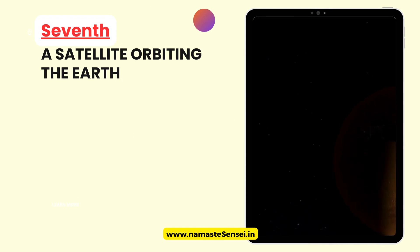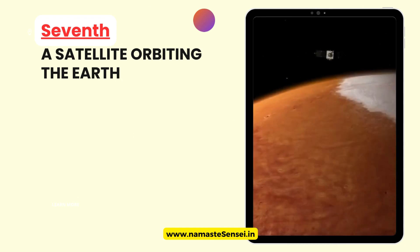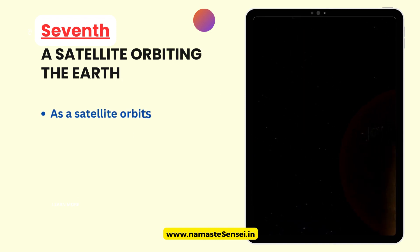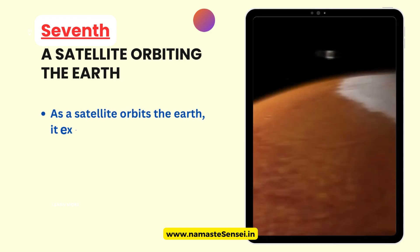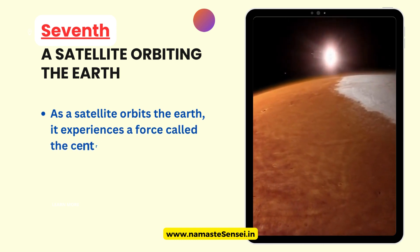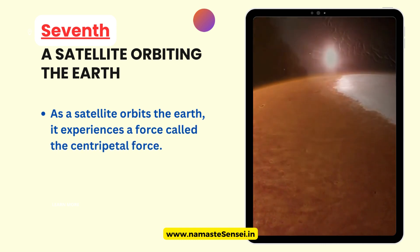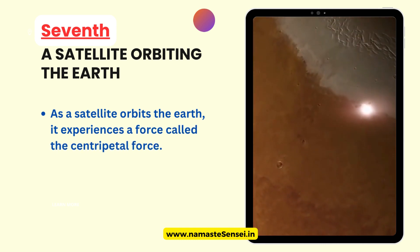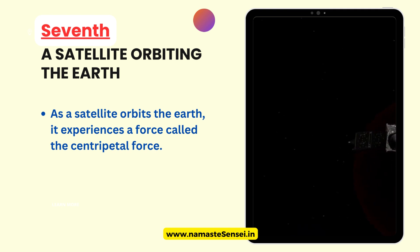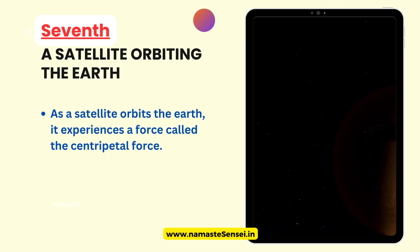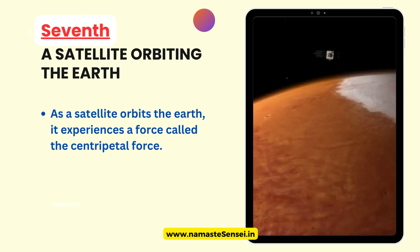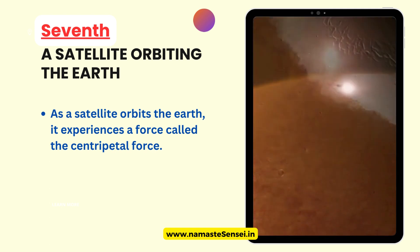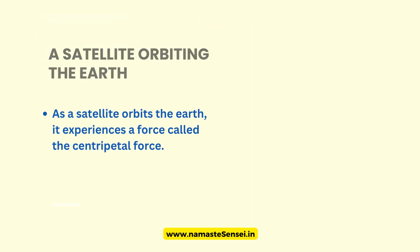Seventh, A Satellite Orbiting the Earth. As a satellite orbits the Earth, it experiences a force called the centripetal force that keeps it moving in a circular path. This force causes the satellite to maintain a constant speed and direction, or experience no tangential acceleration.